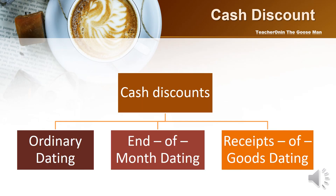To summarize our discussion on cash discounts, there are three types. First, ordinary dating, whereby payment terms are based on the invoice date. Next, end-of-month dating, which shifts the invoice date to the last day of the month so that the discount or credit period starts after the end of the current month. And finally, receipts of goods dating, meaning the discount and credit periods start on the day after the merchandise has been received.